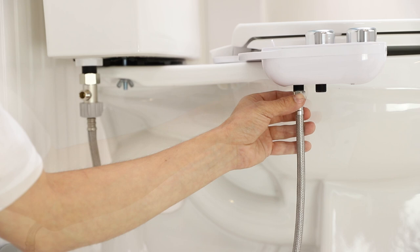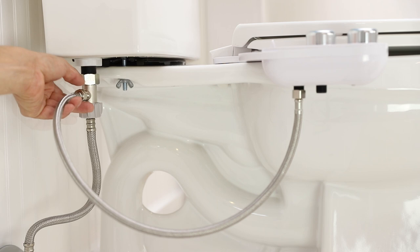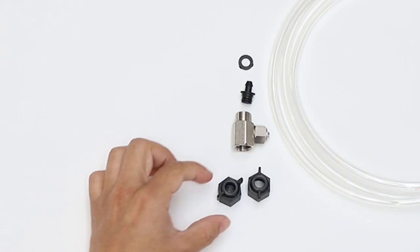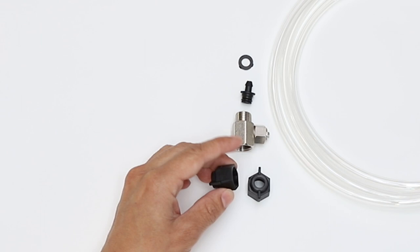Attach the braided metal bidet hose to the cold water inlet under the bidet attachment. Connect the open end of the bidet hose to the open side of the T-valve.